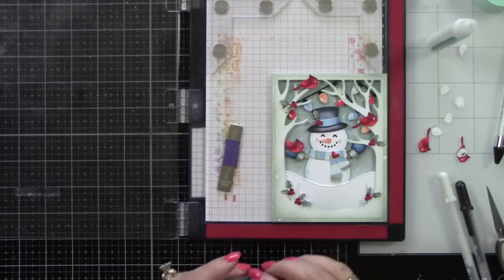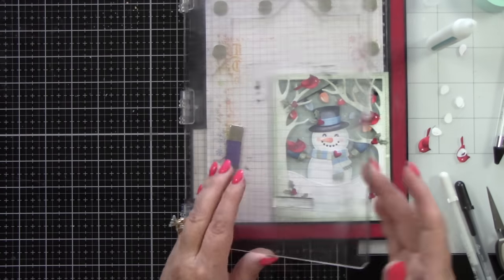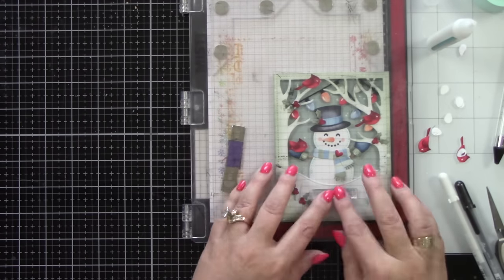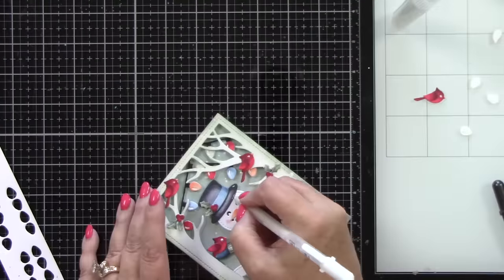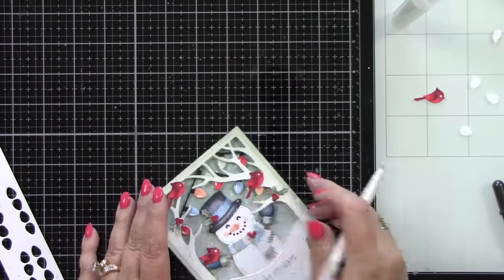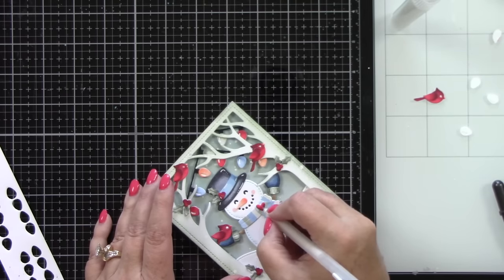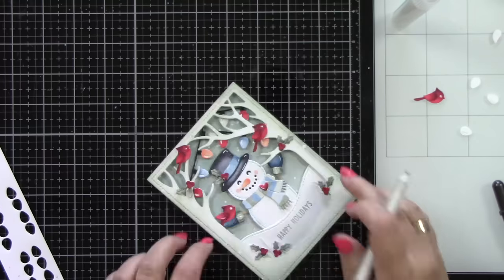Then we have our sentiment, which I should have thought about before, but it's stamped just fine. This is from the little snow globe dog stamp set. It says happy holidays. And I am inking that up with the speckled egg distress oxide ink.